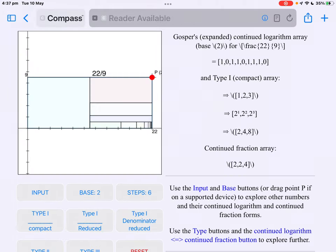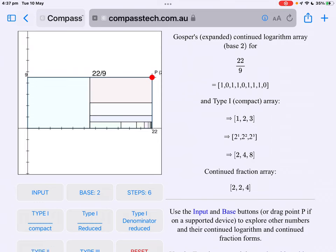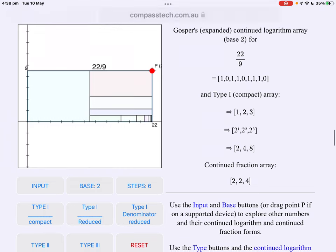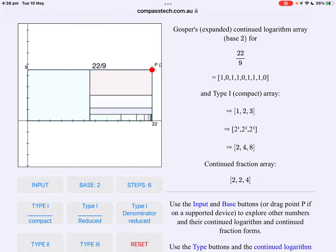A variation on that helps us to visualize continued logarithms. Let's have a look now at 22 over nine. So Gosper's method delivers a string of zeros and ones as shown here. One, zero, one, one, zero, one, one, zero. We count each of the ones. So the first one is recorded. Then the zero says stop counting, now start again. Then there's a string of two. Another zero ends that string, string of three. So in fact, the continued logarithm compact array for 22 over nine is simply one, two, three.